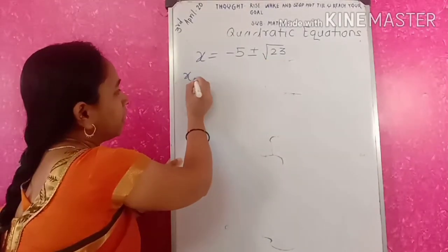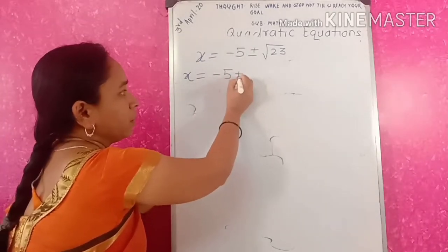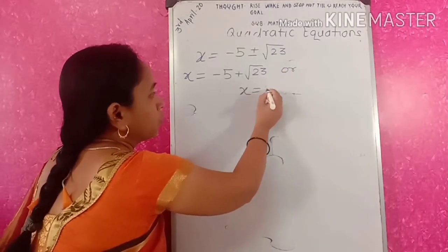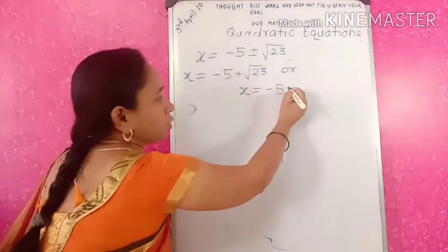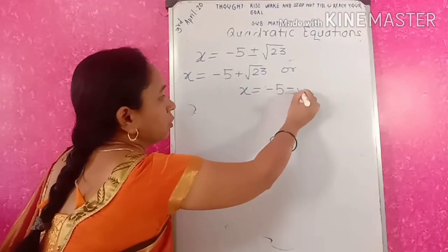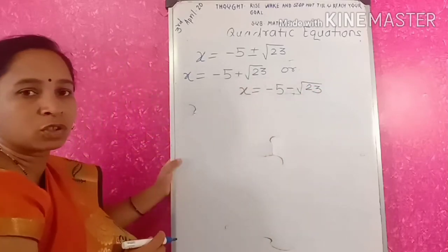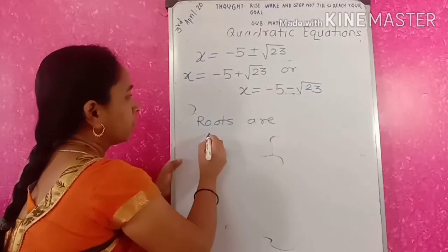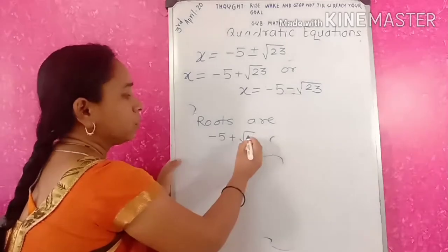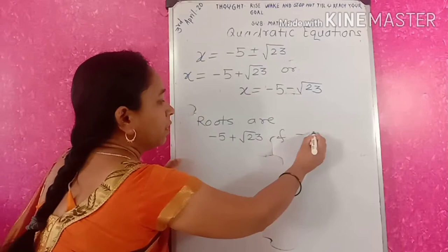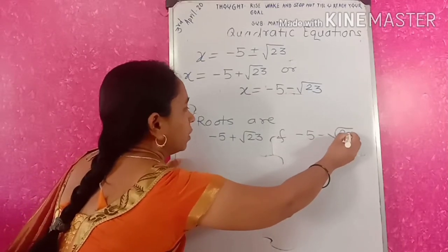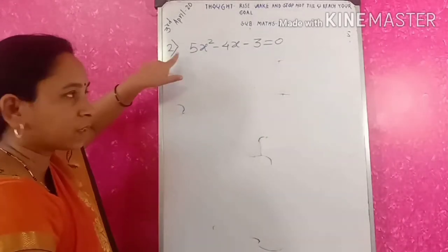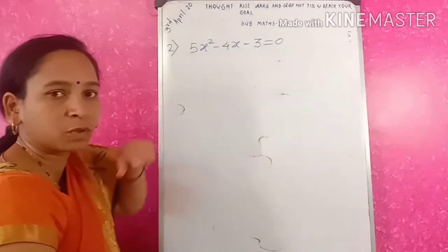So x equals minus 5 plus root 23, or x equals minus 5 minus root 23. These are the roots of that equation. Therefore, roots are minus 5 plus root 23 and minus 5 minus root 23. Now we will see the next example. Second example: 5x squared minus 4x minus 3 equals 0.